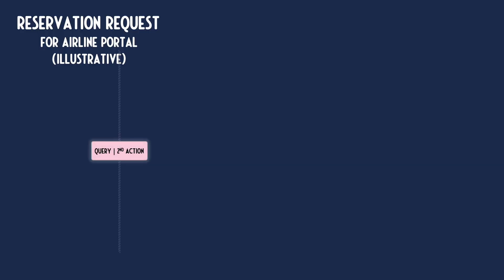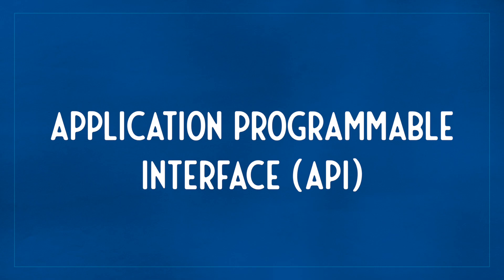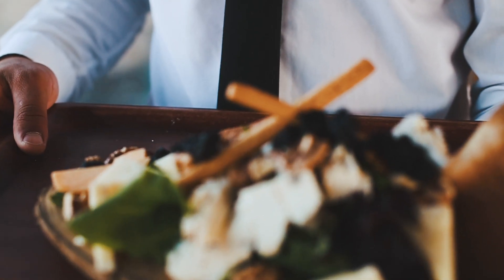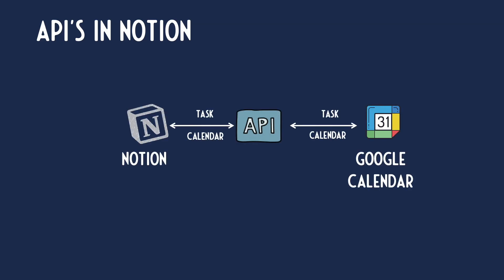The API is an agent that establishes a connection to work together between two or more applications. API stands for Application Programmable Interface. In simple layman terms, if you go to the restaurant to order food, the waiter is the equivalent of an API. He interacts with you and the kitchen and finally the cashier to fulfill your needs and of course that of the restaurant. A real-world Notion-related example would be when you want Notion to add or modify Google Calendar information through a push or a pull.